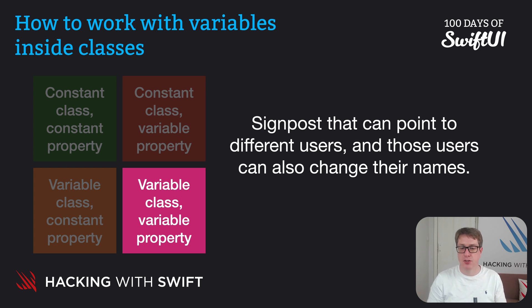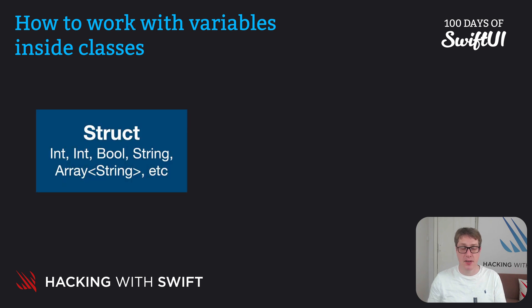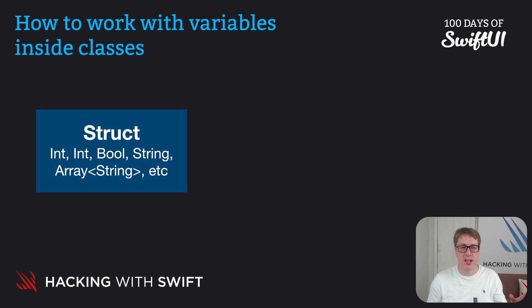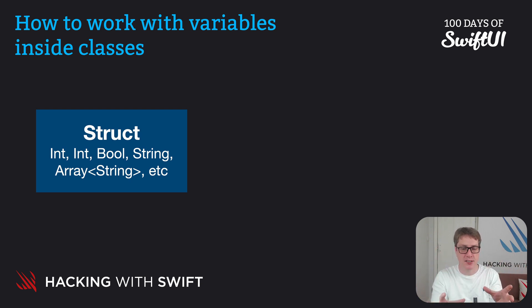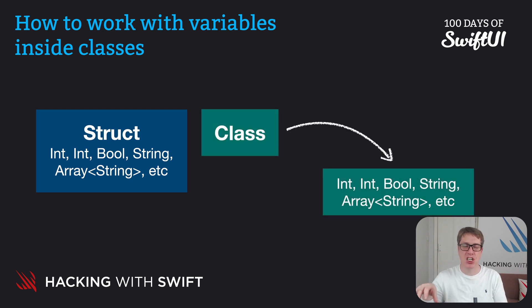This is different from structs, because constant structs cannot have their properties changed even if you make the properties inside variable. A struct holds all its data directly inside itself — int properties, a boolean, a string, an array of strings, whatever — they're all held directly inside the struct. So if you try and change a value inside the struct, you're also implicitly changing the whole struct, which is not possible because it's constant. Whereas classes are referring to some other data, and that can change freely without the class changing.